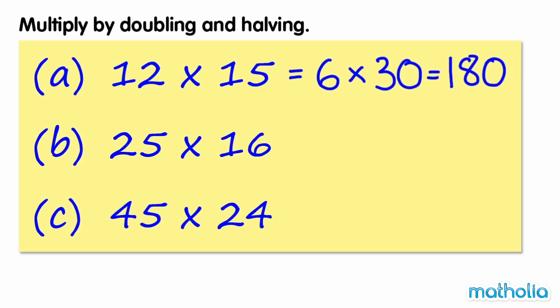Let's find 25 times 16 mentally. Half of 16 is 8, and double 25 is 50. 5 times 8 equals 40, so 50 times 8 equals 400. 25 times 16 equals 400.